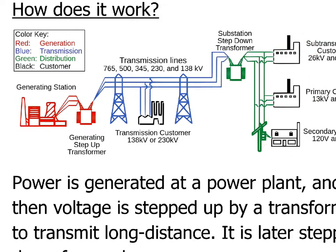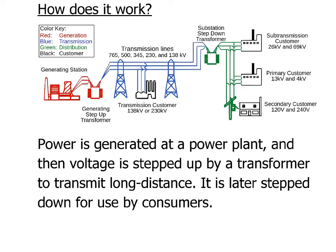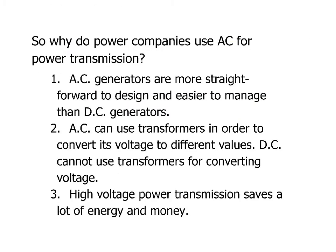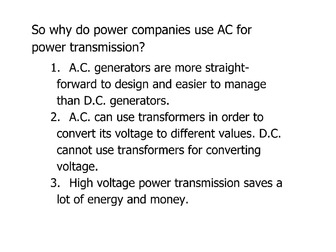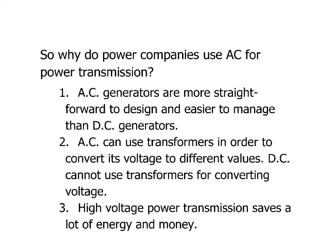That is the big picture of what's going on. Now let's talk about why we're using alternating current. Why alternating current? Why not direct current? All of our devices — our phones, computers, electronics — they all use direct current. So why are we transmitting power using alternating current?